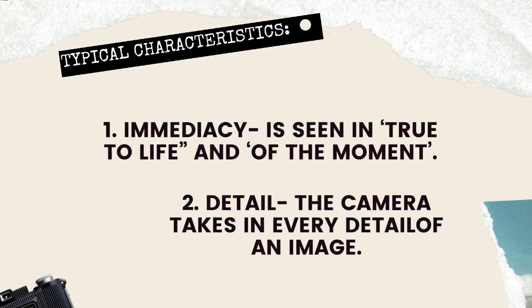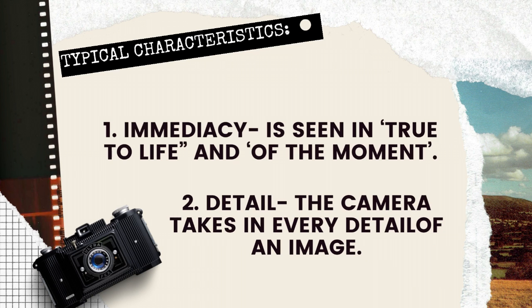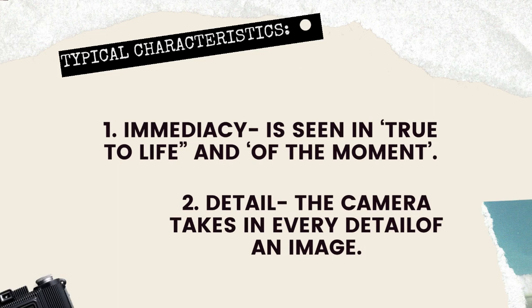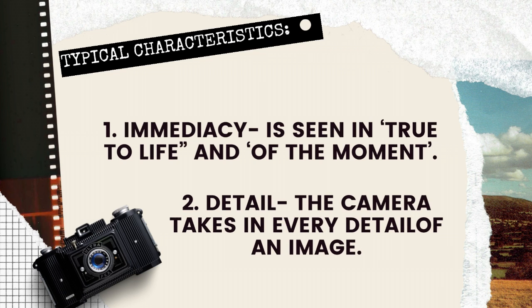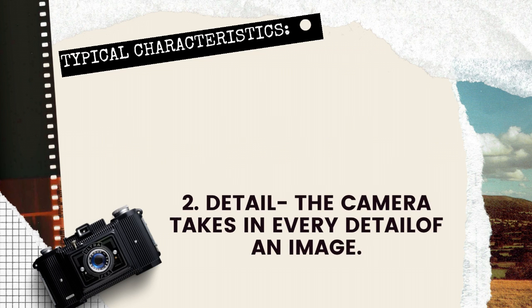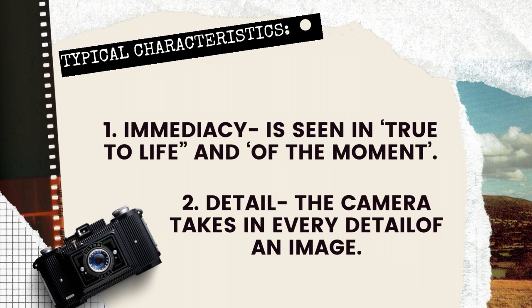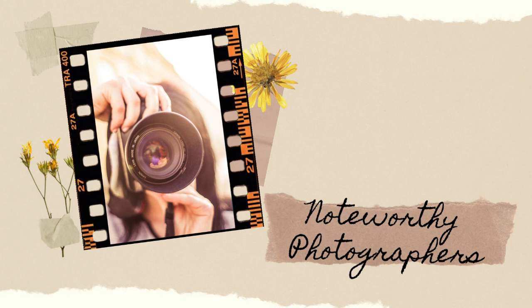Two typical characteristics of photography: number one is immediacy — it is seen in true-to-life and of-the-moment captures. Number two is detail — the camera takes in every detail of an image. Photographs are vital tools in communication fields such as journalism, advertising, education, and even in courts of law.